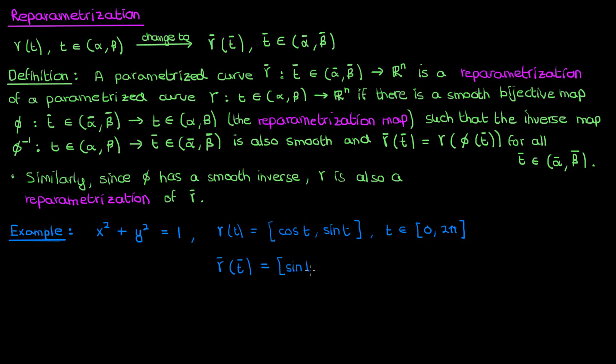However, we can switch the order of the sine and cosine to end up with another parametrization that works equally well. Because sine and cosine are just phase shifted relative to each other, we can write our reparametrization map as t = φ(t̄), which is π/2 - t̄. Note that this reparametrization map is bijective. It's 1 to 1. Every value of t̄ corresponds to a unique value of t, and every value of t corresponds to a unique value of t̄. This map is also smooth, because it's just a linear function it can easily be differentiated. Finally it also has a smooth inverse, if we isolate t̄ we'll get another linear function, which by virtue of being linear is also smooth.